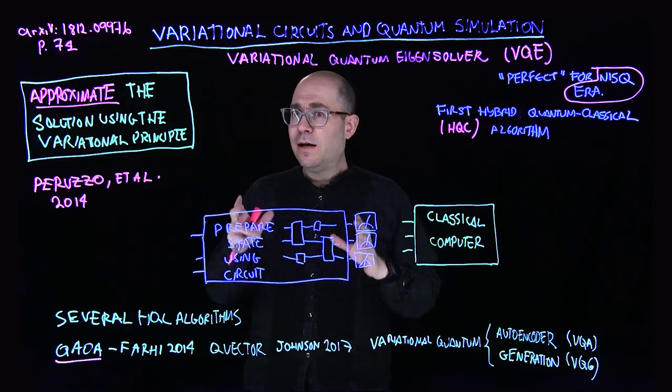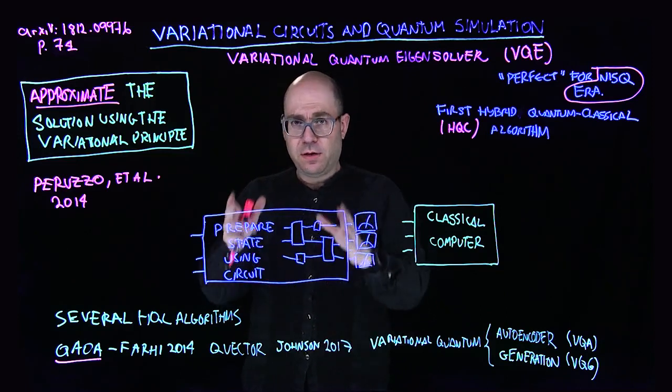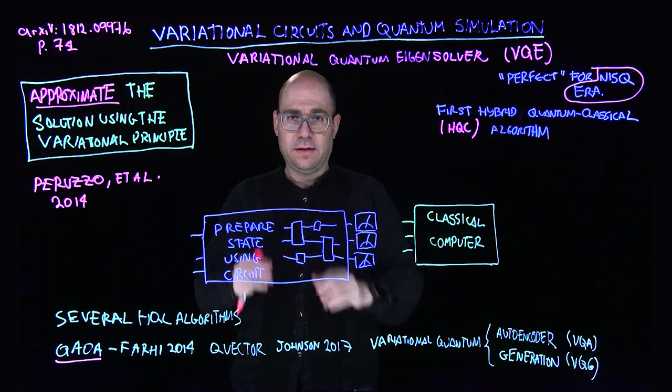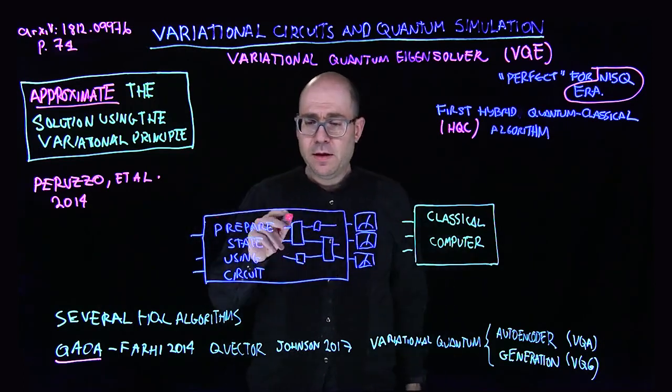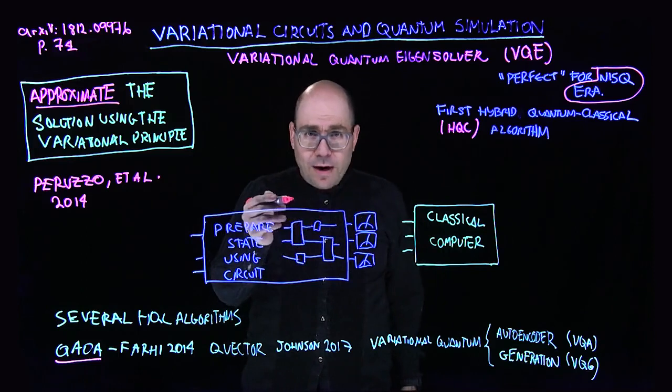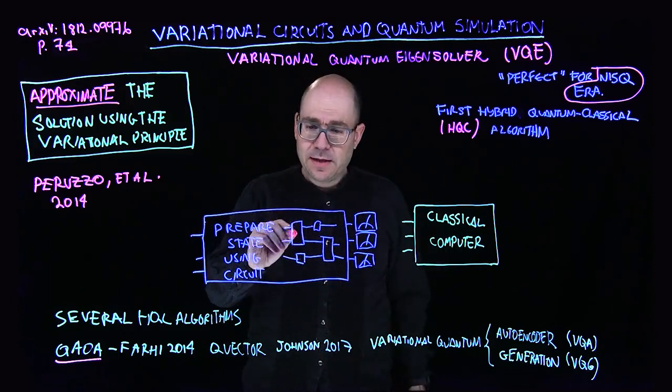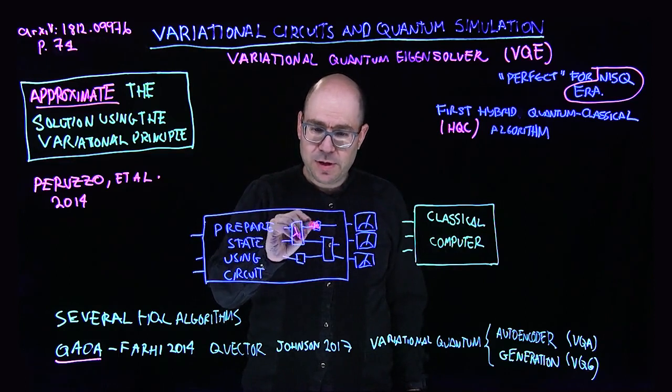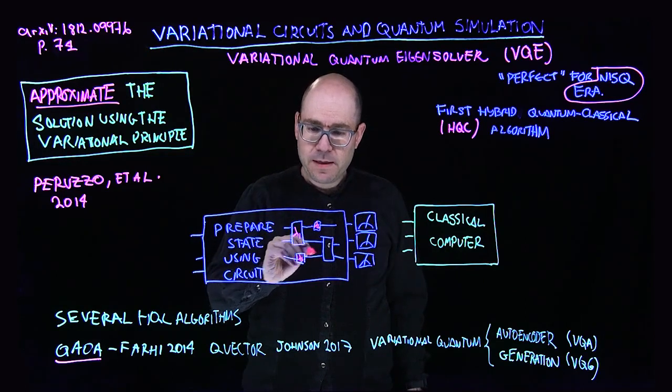First, you're going to define a quantum circuit that I like to call it a stencil. This is a quantum circuit that has a certain shape and each one of these elements here, one or two qubit gates or multi qubit gates, we have one or more parameters. Let's say each one of them has one parameter. Usually, they have more than one.